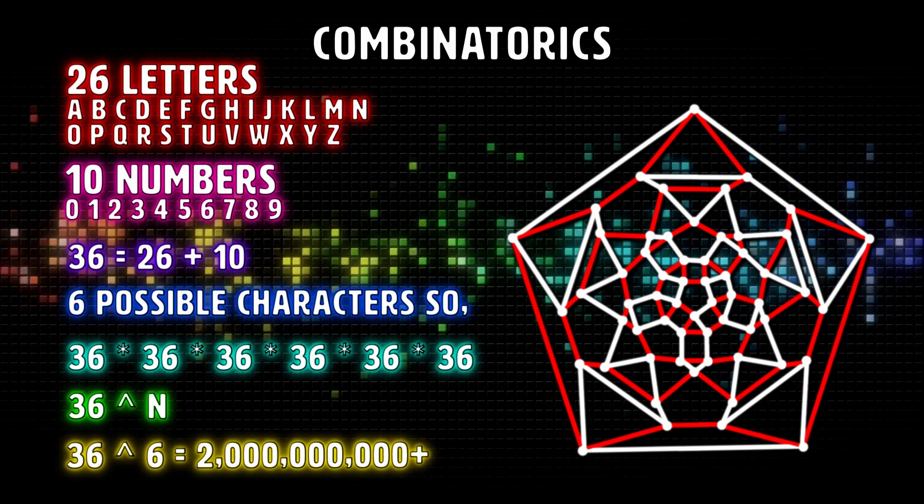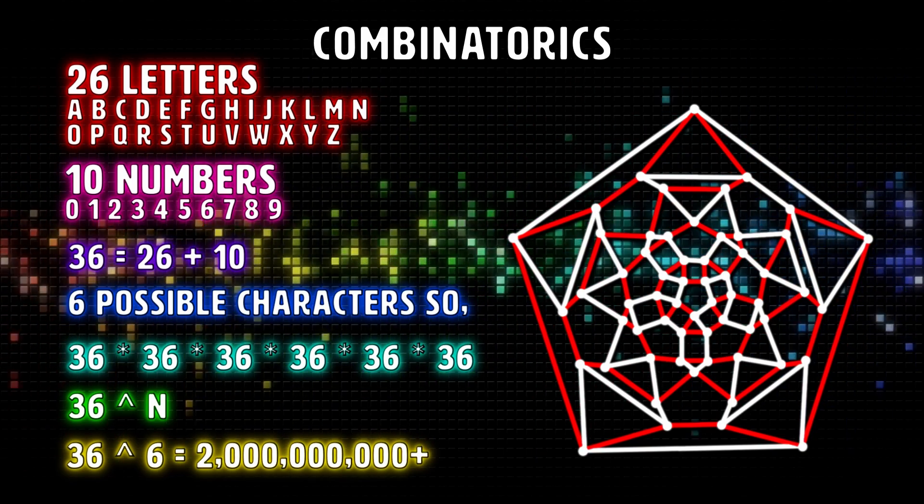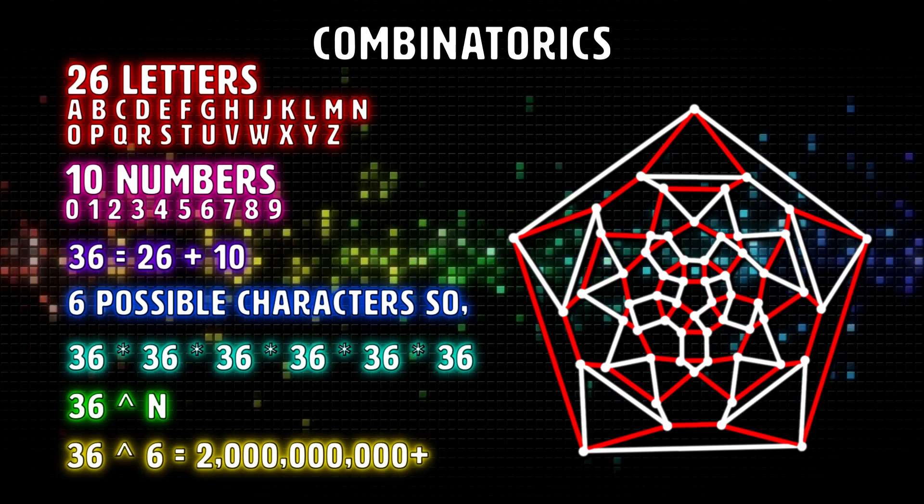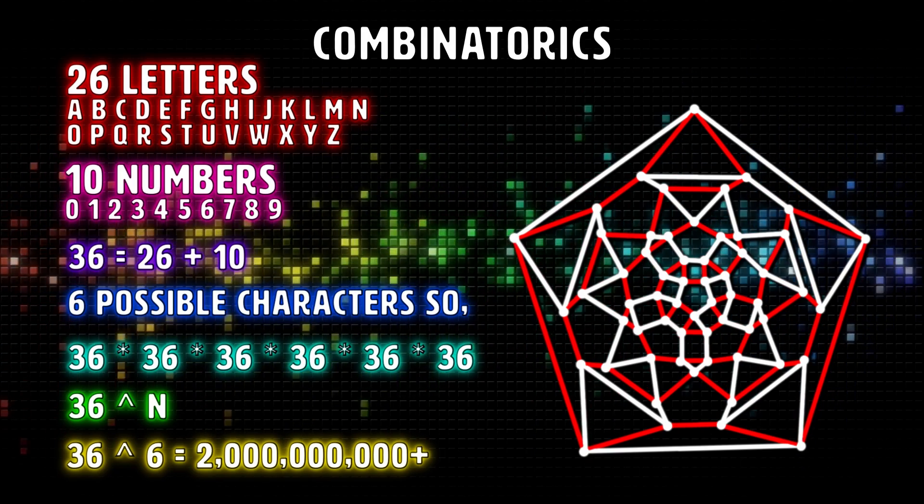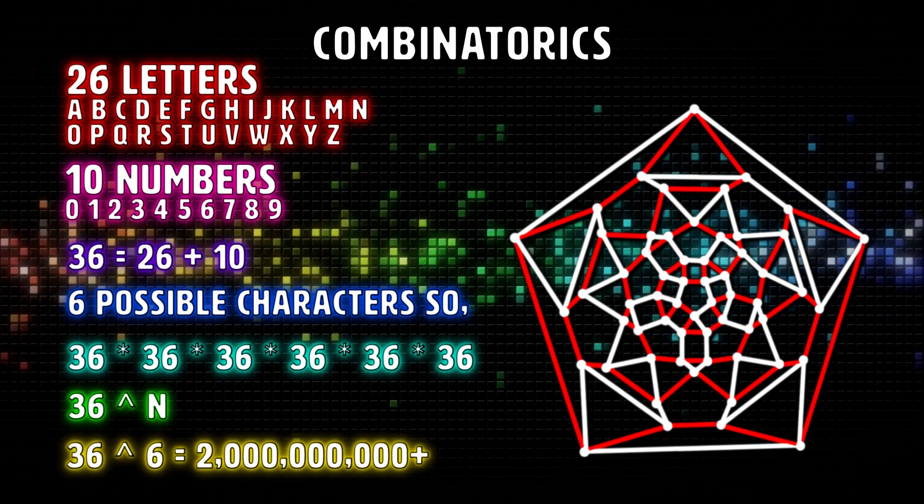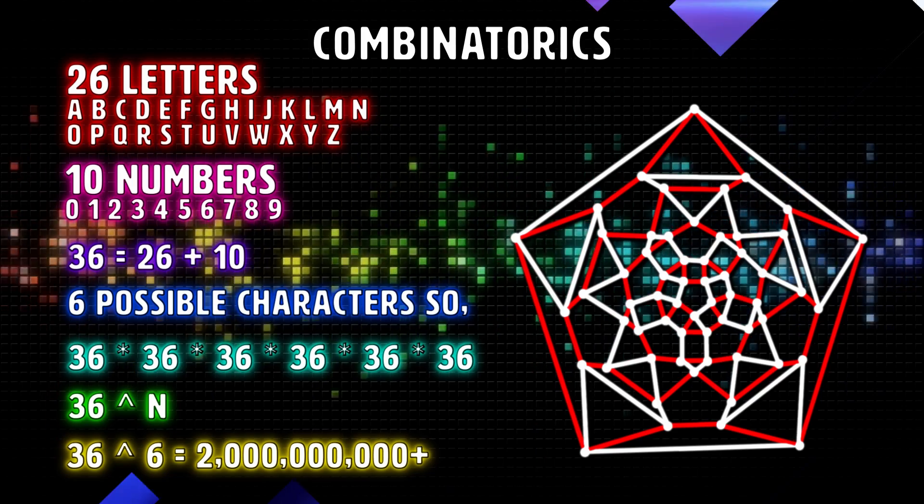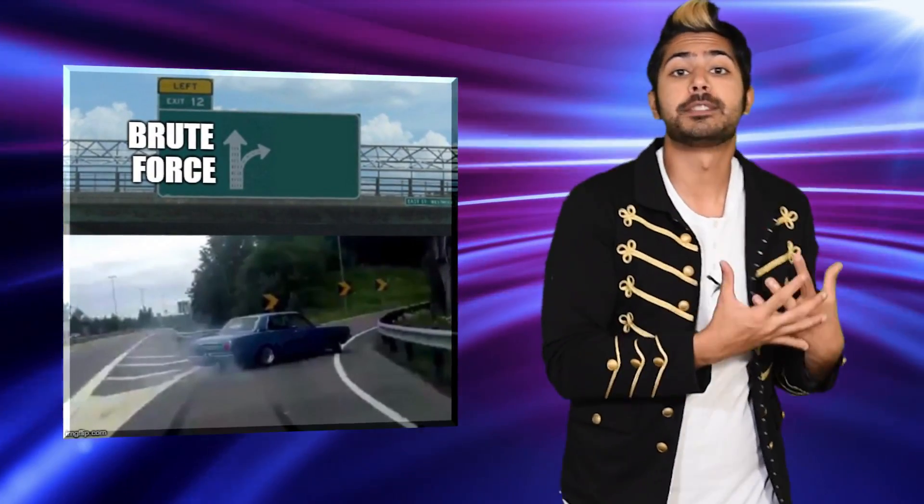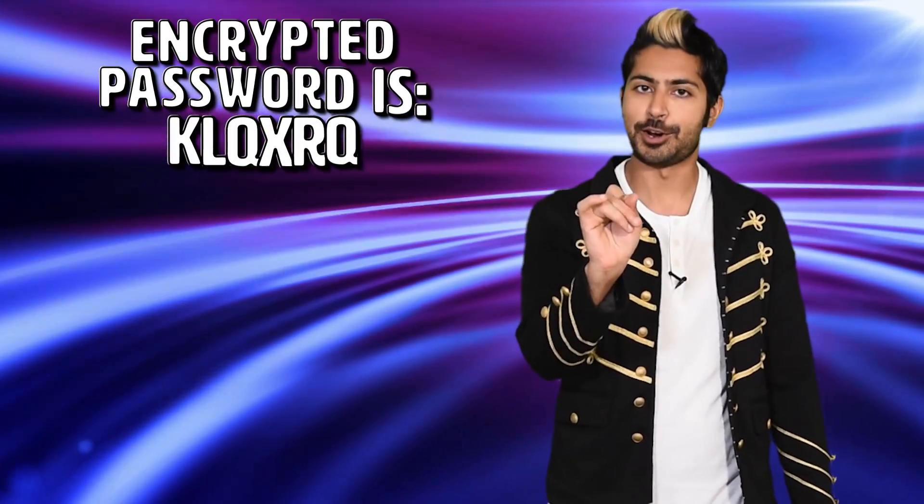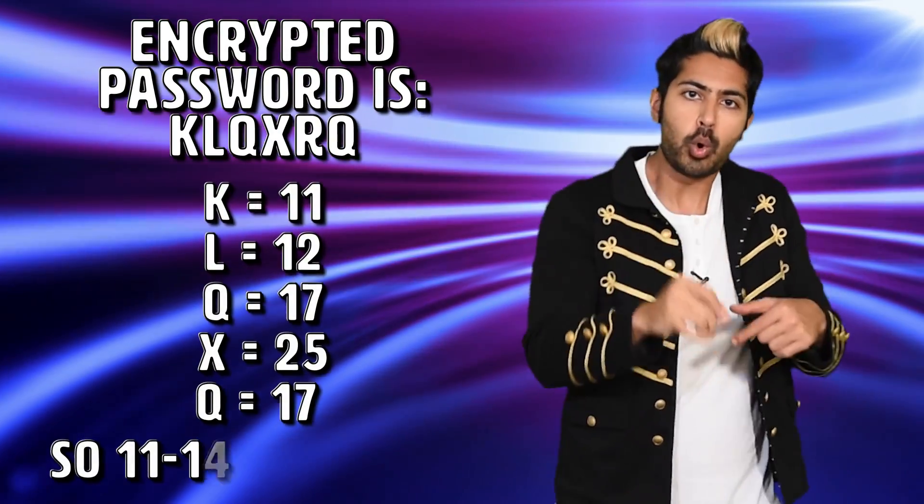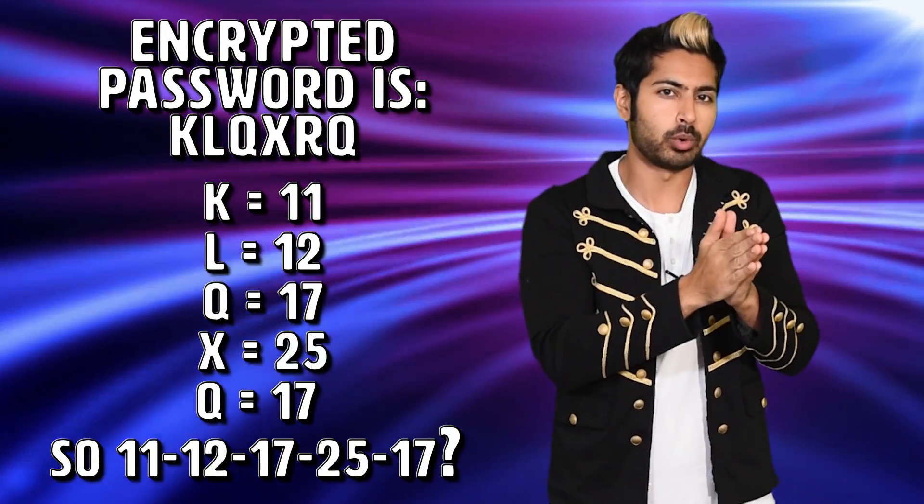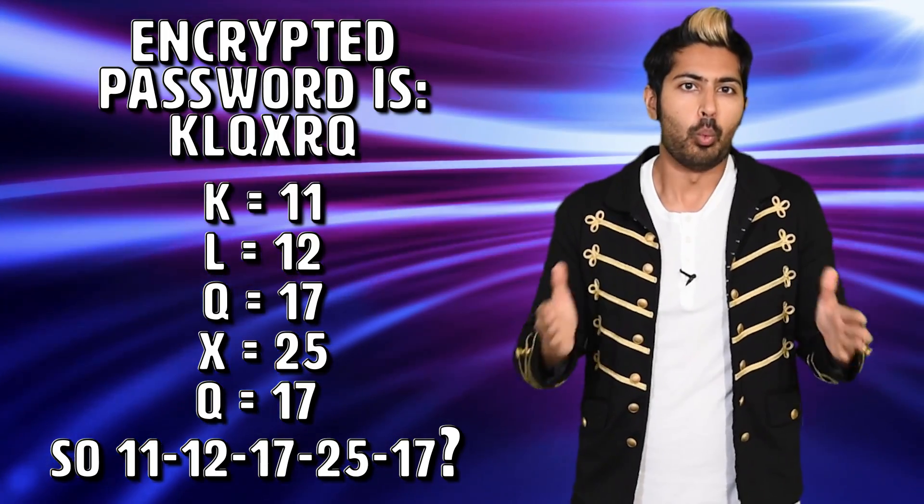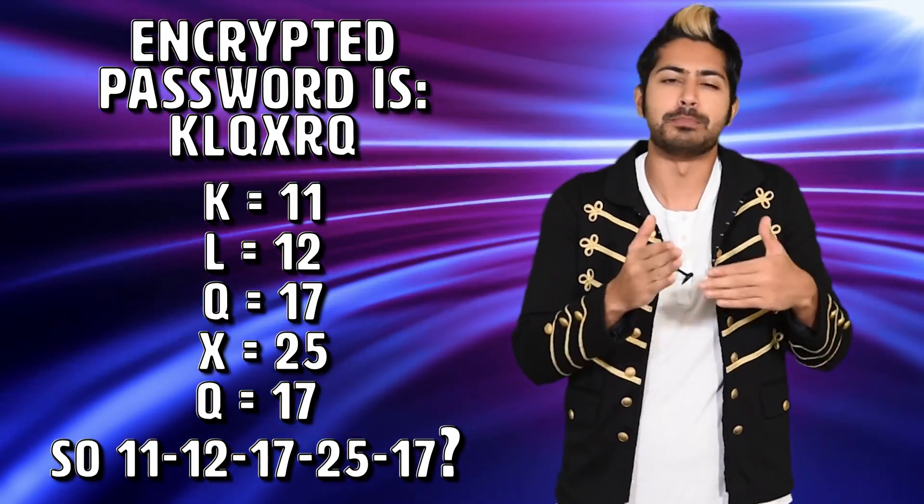Way too much to brute force. So we can go ahead and pause our script. This is an example of combinatorics, the study of counting both as a means and an end in obtaining results, and it's a part of discrete math. We need to think of a smarter way to decode this password. What if each of the characters in the string was equivalent to a number and the actual password was solely numerical? What could the mapping from characters to numbers be here?